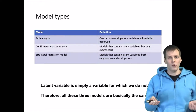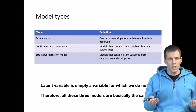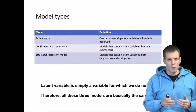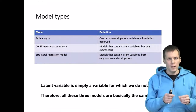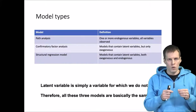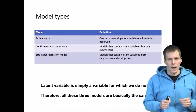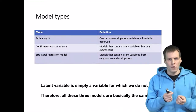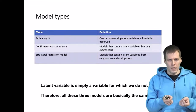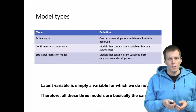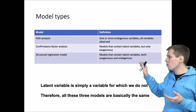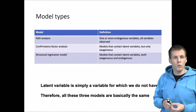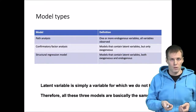Confirmatory factor analysis models, on the other hand, are models where we have latent variables and observed variables, so that the latent variables are modeled as causes of the observed variables, and the relationships between the latent variables are left unexplained — they are freely correlated. We are simply interested in knowing what the observed variables have in common, and that's what confirmatory factor analysis answers.